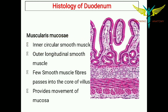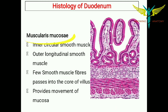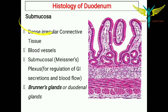The muscularis mucosa is the last layer of the mucosal layer of the small intestine. It has an inner circular smooth muscle and an outer longitudinal smooth muscle, and a few smooth muscle fibers pass into the core of the villus to provide movement to the mucosa. This muscularis mucosa resembles the muscularis externa, which is the third layer of the GI tract.